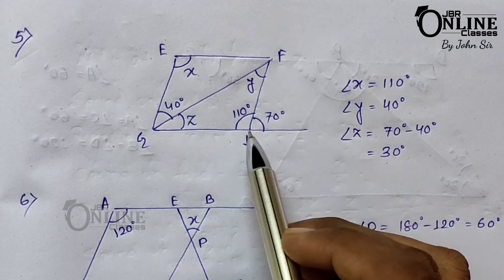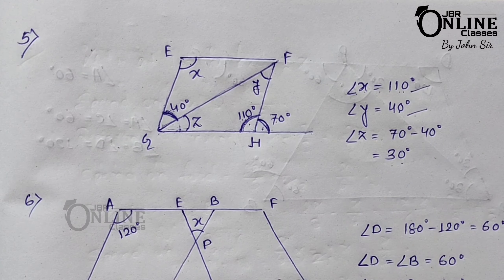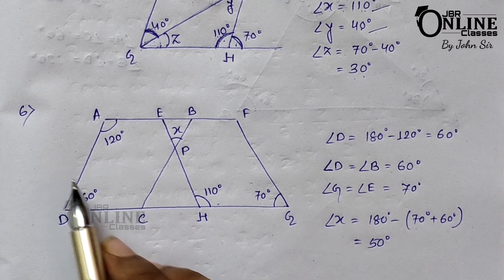To find Z: in the triangle formed, Y equals 40 degrees and one angle equals 110 degrees. Since EG is parallel to FH, this angle equals 70 degrees total, so with 40 degrees already accounted for, Z equals 70 − 40 = 30 degrees.